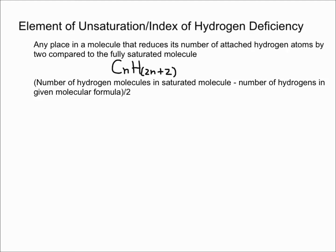Essentially the max amount of hydrogens that the molecule can have, and then you subtract the number of hydrogens in the given molecular formula and divide it by 2.